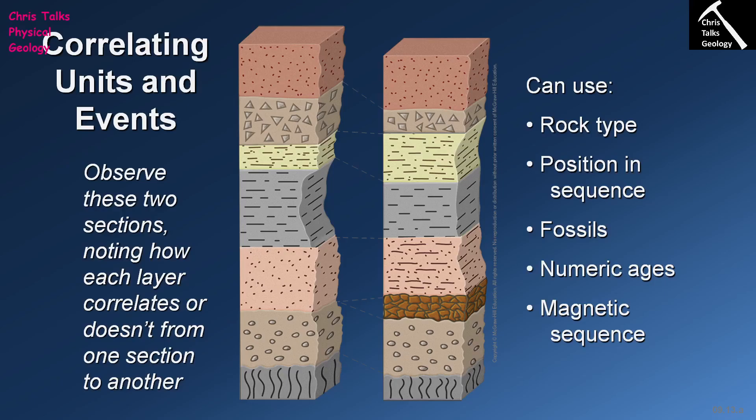We've already discussed how we can use relative dating to put the rocks that we see in an area into a chronological sequence. We can use the principle of superposition, the principle of original horizontality, the principle of cross-cutting relationships, the principle of inclusions, and the principle of baked contacts to help us work out the order in which layers of rock were formed in an area.